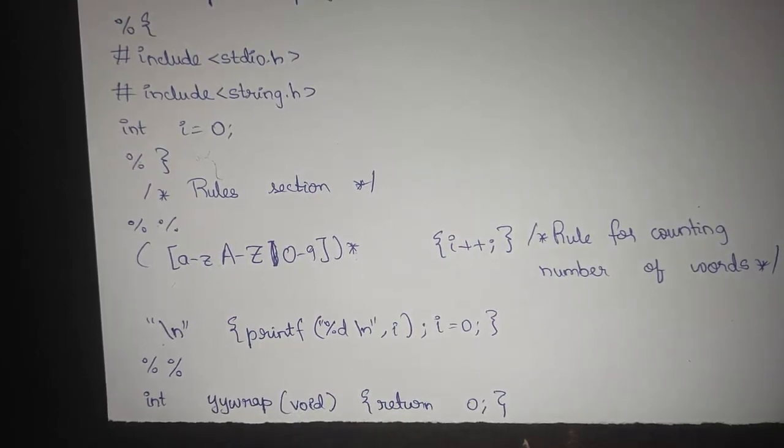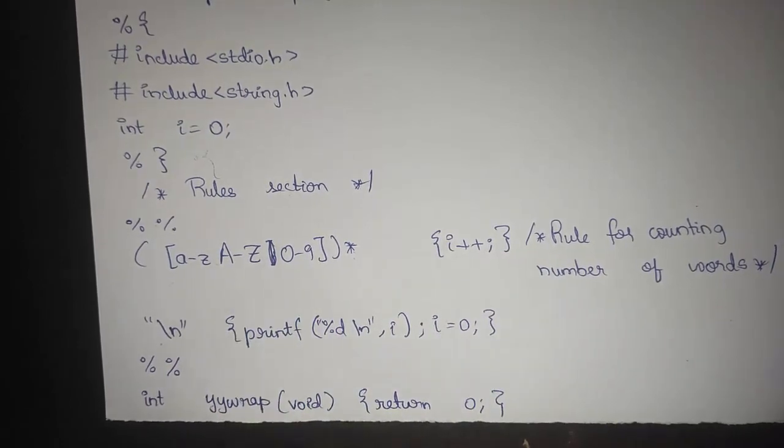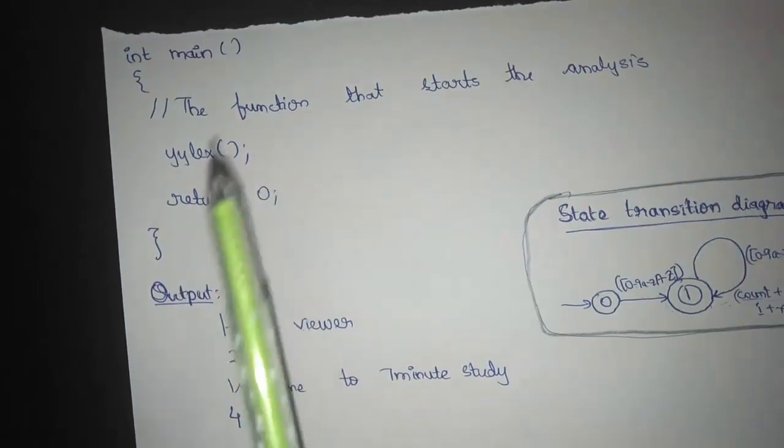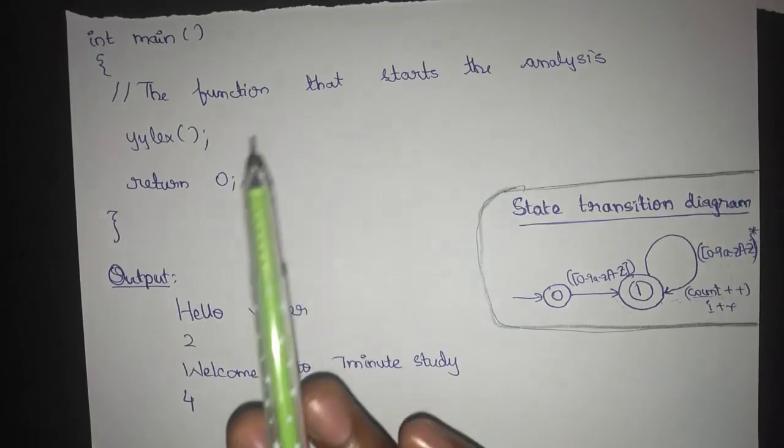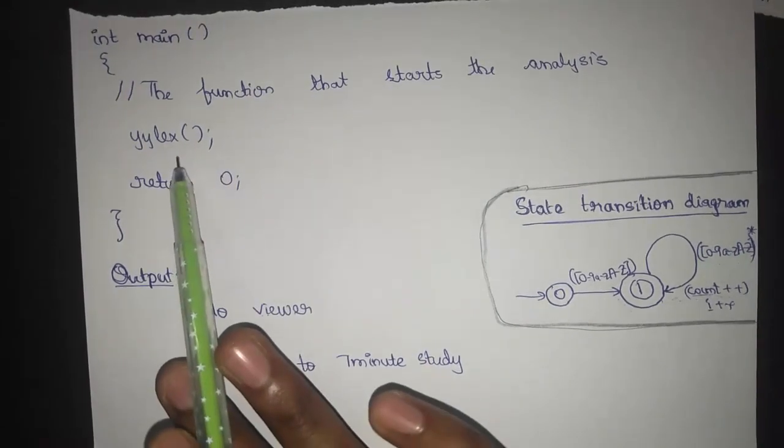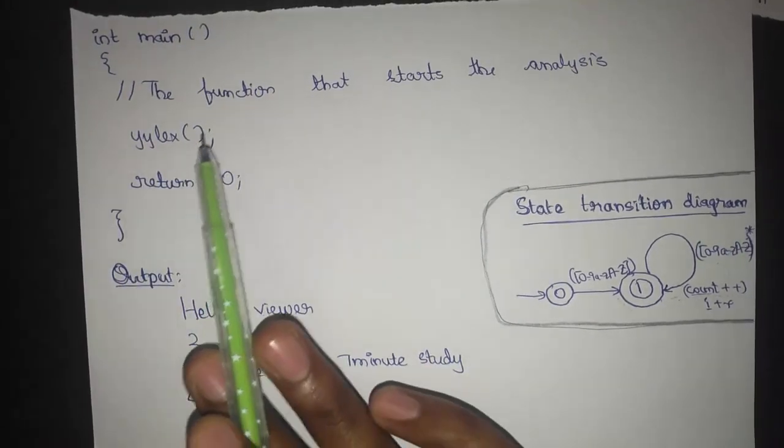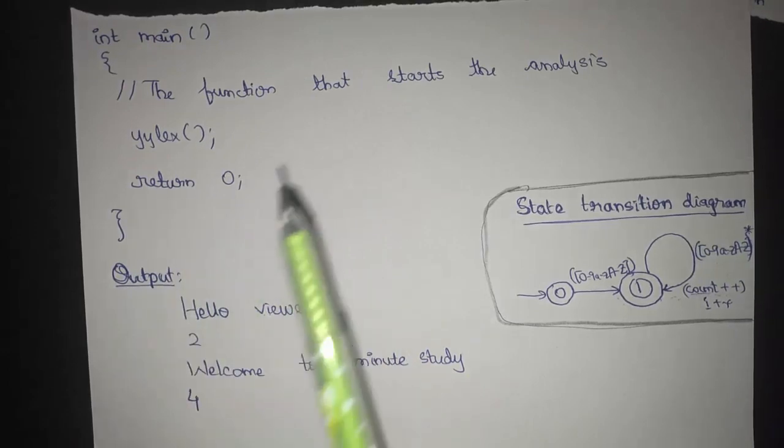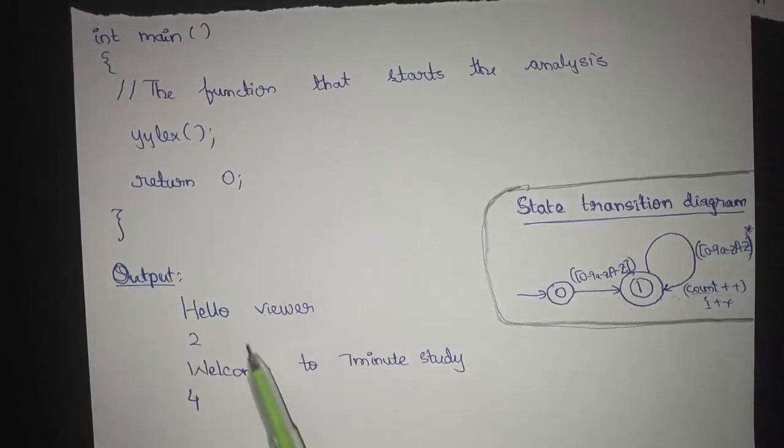Here in the main, int main function, we just call the yylex which will just lead us to the yywrap function and the execution will be happening there.